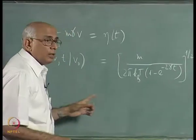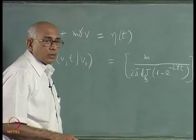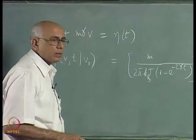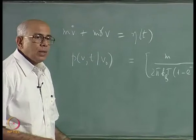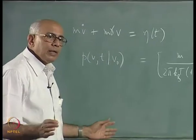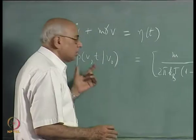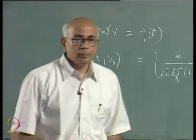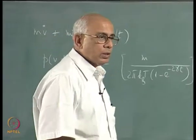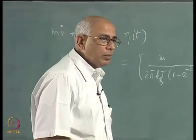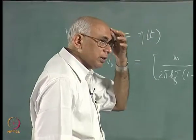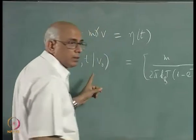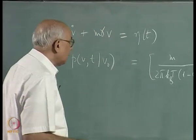This distribution starts as a delta function at V = V₀ at t = 0 and asymptotically approaches the Maxwellian distribution — the usual Gaussian corresponding to thermal equilibrium — as t tends to infinity. Since V is a Markov process, all probability distributions connected with V are known, because everything can be written in terms of this conditional density alone.